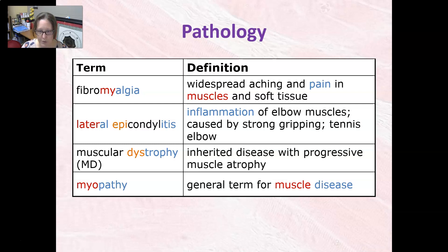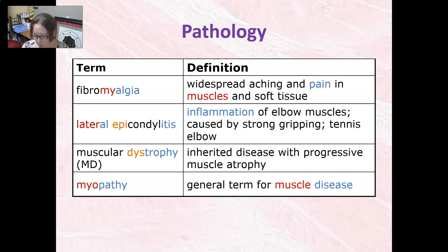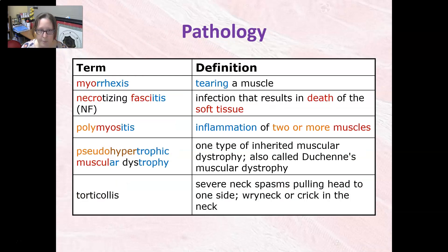Muscular dystrophy is an inherited disease with progressive muscle atrophy. Myopathy — probably myopathy is better — is a general term for muscle disease. Myorexis is tearing of a muscle.